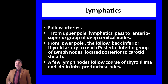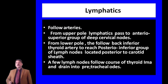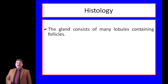Lymphatics of the thyroid gland are very important because malignancies of the thyroid spread to distant lymph nodes through them. From the upper pole, lymphatics pass along the superior thyroid artery to the anterior superior group of deep cervical lymph nodes. From the lower pole, lymphatics follow the inferior thyroid artery to the posterior inferior group of lymph nodes located posterior to the carotid. A few lymph nodes follow the course of the thyroid ima artery and drain into the pre-tracheal group of lymph nodes.